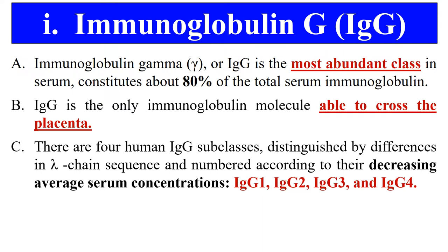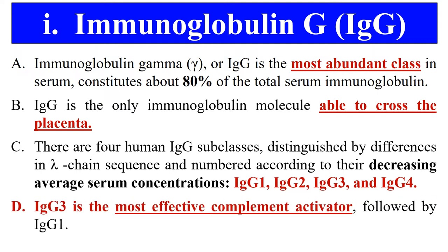IgG has four subclasses: IgG1, IgG2, IgG3, and IgG4, and the ratio of abundance is in decreasing order, meaning IgG1 is at the highest concentration, followed by IgG2, IgG3, and IgG4. It is also the most effective complement activator — there is a system inside our body known as the complement system whose function is to kill pathogens, and IgG activates this complement system very effectively.